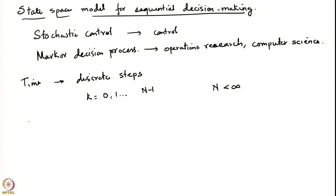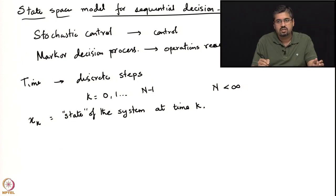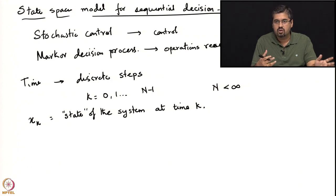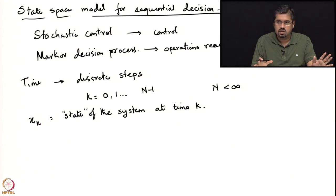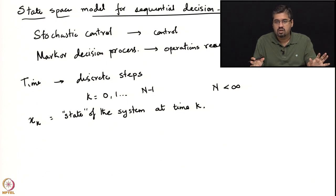The system we are considering is modeled using its state: x_k is the state of the system at time k. The state at time k is assumed to encompass enough information about the system so that we can talk about the problem completely once we know it. The cost function we will consider has to be a function of the state, which gives a complete description of the configuration of the system.